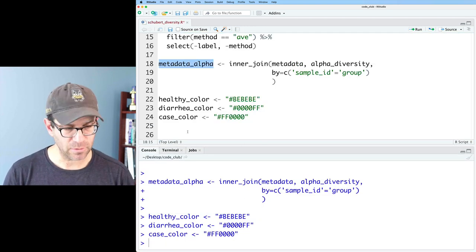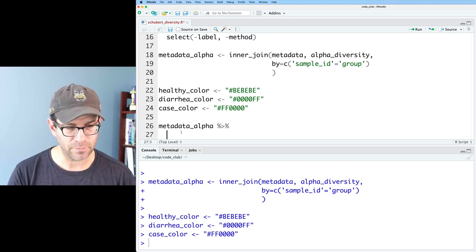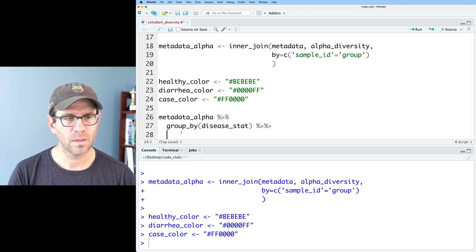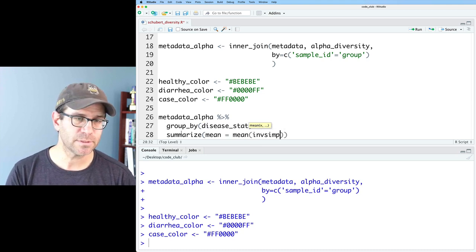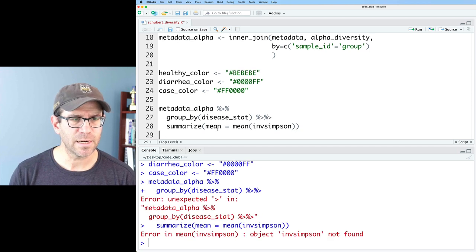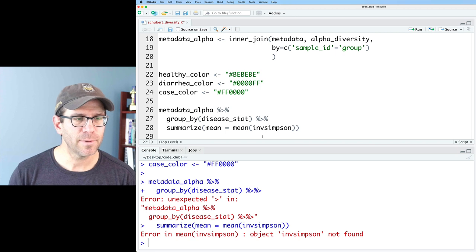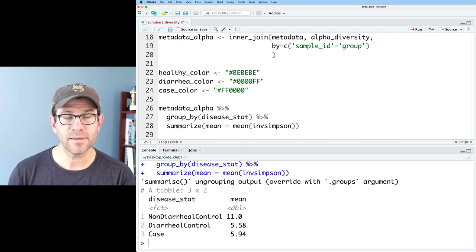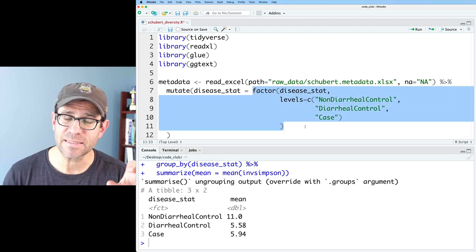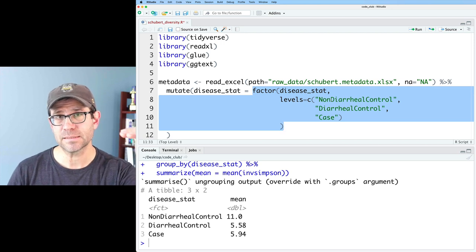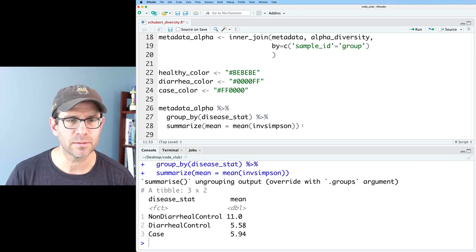What we're doing here is we're reading in metadata, reading in information about alpha diversity and joining that all together. I also have a color scheme that I've been using in past episodes. I'll go ahead and load all that. What we need to do next is to take metadata alpha and we need to summarize the inverse Simpson diversity across our three disease statuses. So I'll take metadata alpha and we'll group by disease stat and we will do a summarize and I will do mean and this will be mean inverse Simpson. Let's go ahead and make sure that works. Oh, it's not happy because I didn't run the library. So I've got to run everything. So it's complaining because I have a stray greater than sign. Let me go ahead and rerun that. There you go. So we now have the mean for non-diarrheal control, diarrheal control, and case.